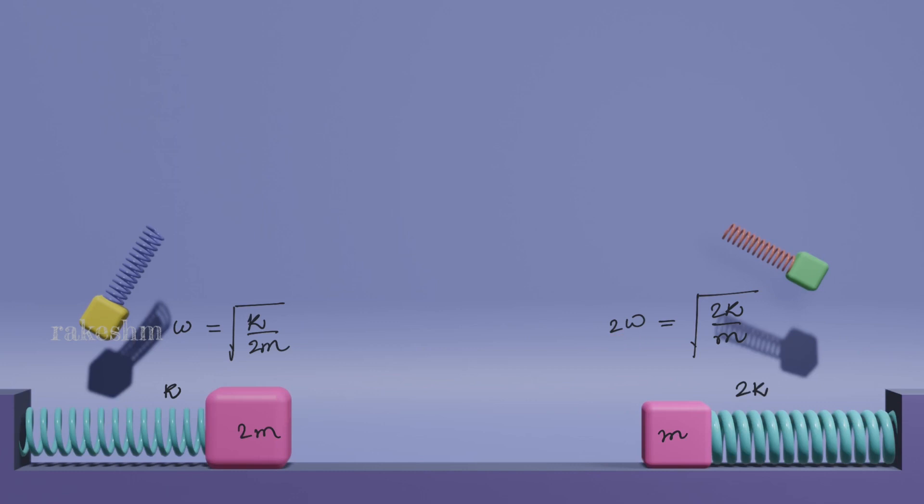Let us now visualize each of these oscillations independently. As both these blocks have the same amplitude and this has more angular frequency, what I want you to notice is that this block moves a little faster than this one. The average speed of this is a little more than this.